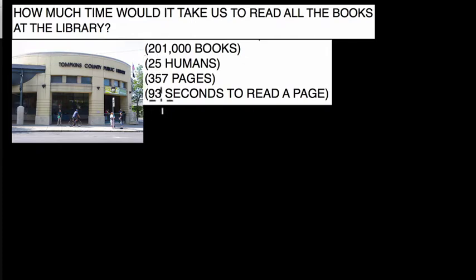So if one person's reading in the library and we know they take 93 seconds to read a page, the first thing I want to figure out is, well, how many pages do I have to read? And to figure that out, I'm going to multiply the amount of books in the library. So basically, what we're trying to figure out here is how many pages do we have to read for one person. So if we have 201,000 books, and what do we know? We know that, on average, books have 357 pages. So we'll multiply 201,000 times 357 pages per book.